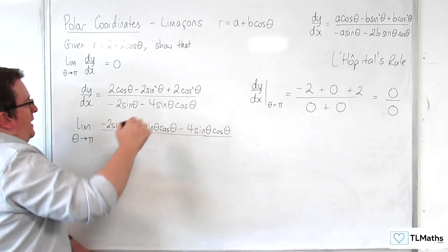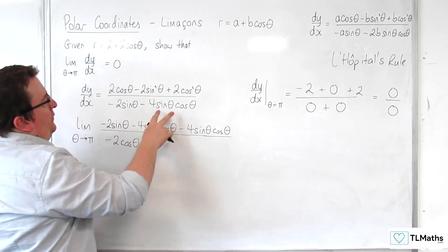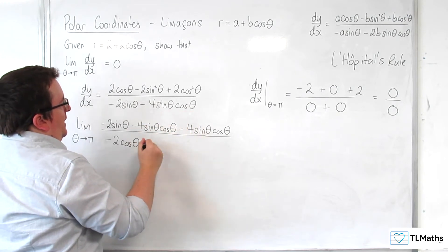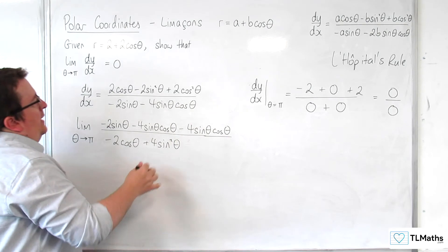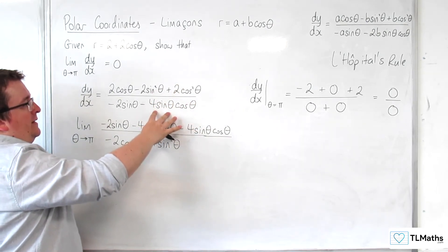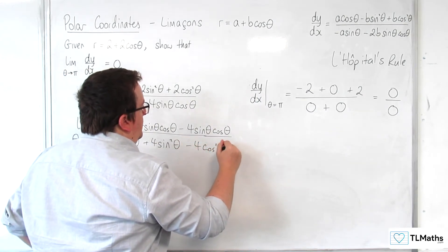Then the denominator differentiates to minus 2 cosine theta. Then a bit of product rule here. So minus 4 sine theta times the derivative of cosine, so we're going to get plus 4 sine squared theta. And cosine theta times the derivative of minus 4 sine theta, so minus 4 cosine squared theta.